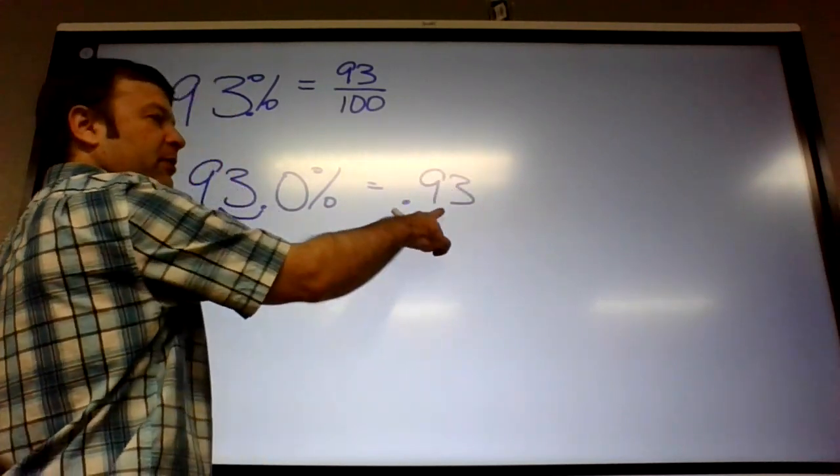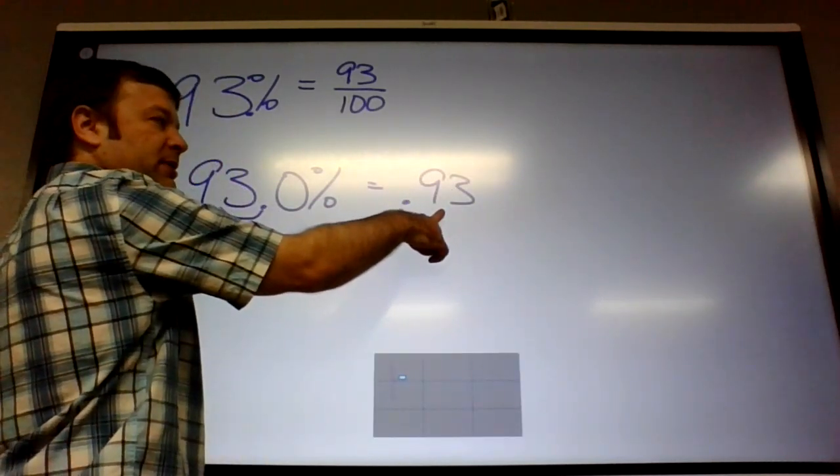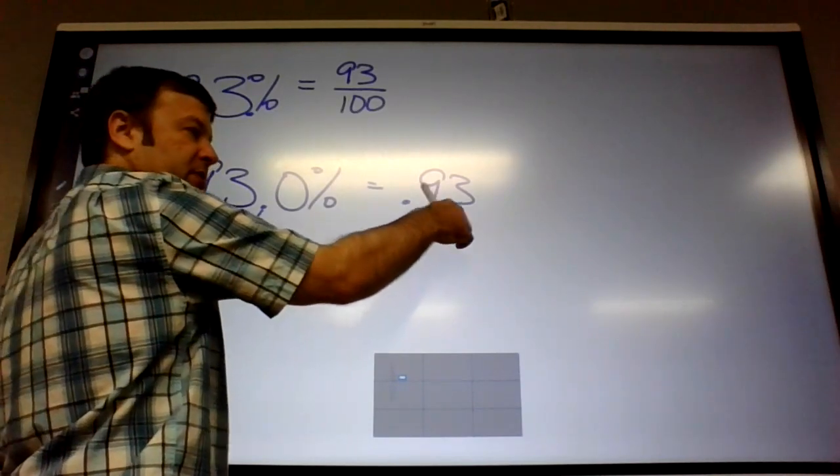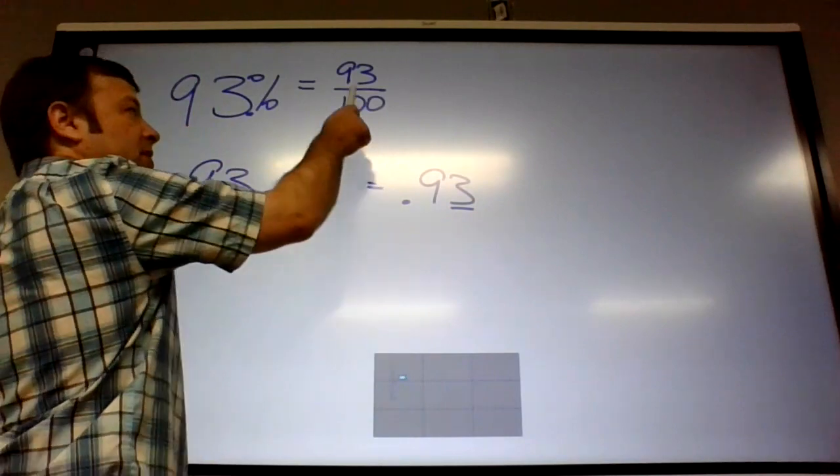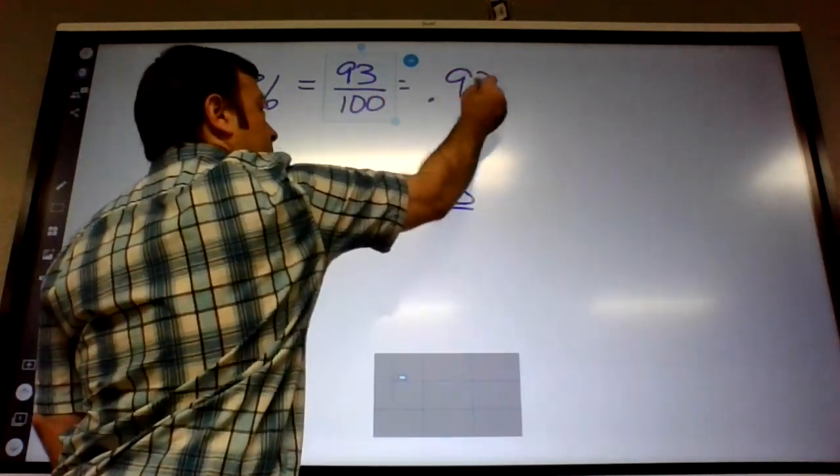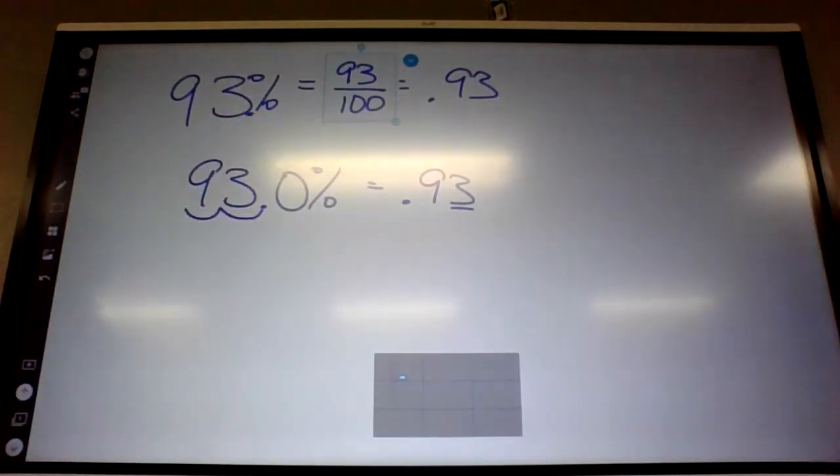You guys recall the correct way to read 0.93? 93 hundredths, because the three is in the hundredths spot. So all three of these are the same. 93% is 0.93 is 93 of 100.